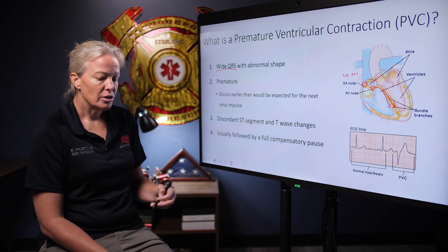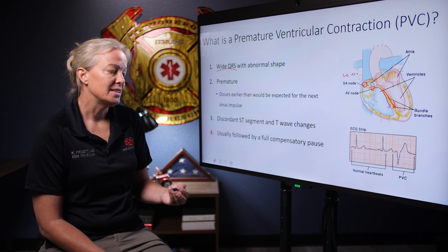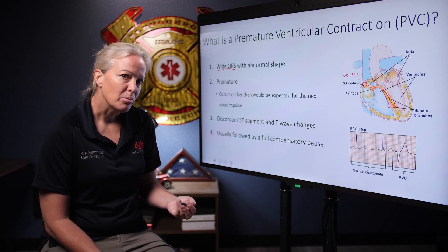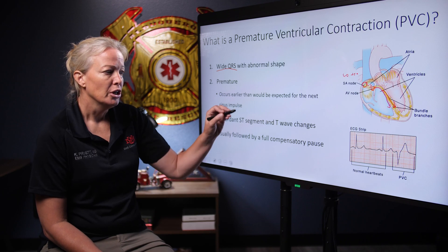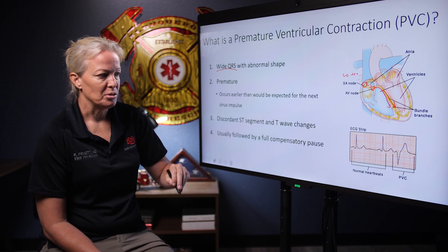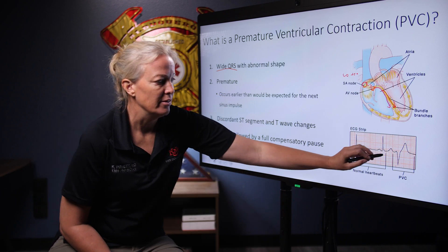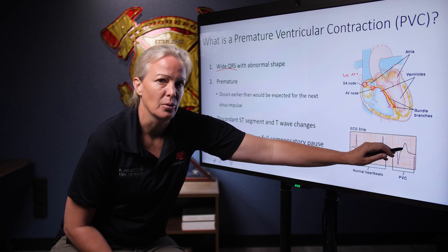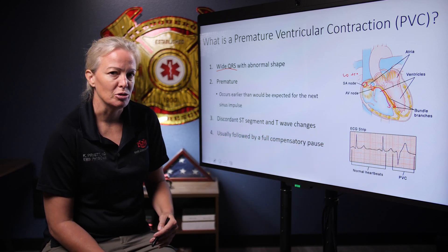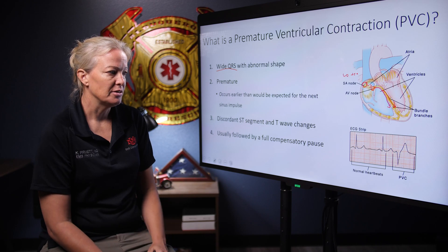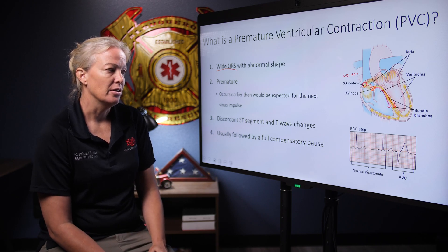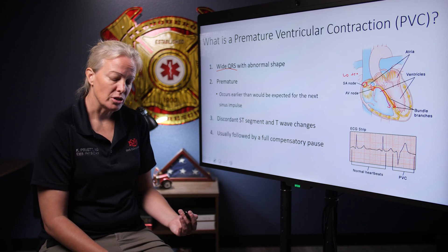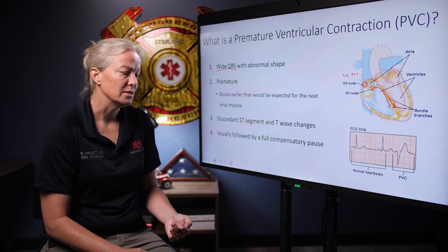The other thing you can look for: it's discordant — which means, as we've talked about with left bundle branch block before — your vectors are opposite of each other. So you have a QRS deflection going down and then the T wave is going up. They should never be in the same direction; there's always an offset in your vectors. And usually after the PVC there's a pause.